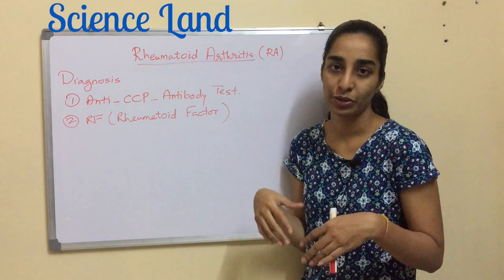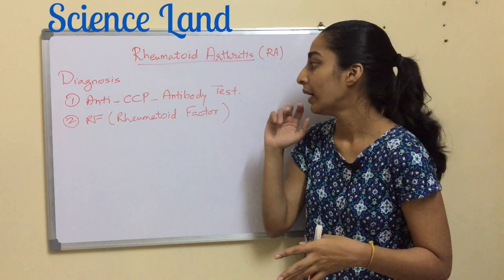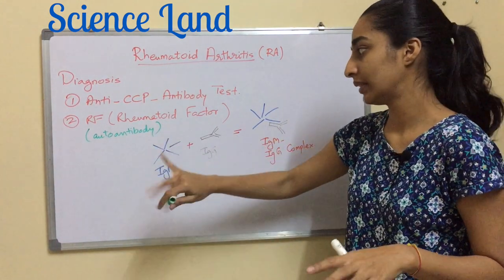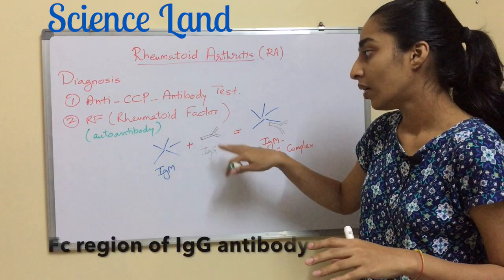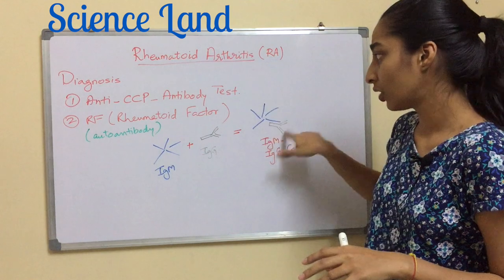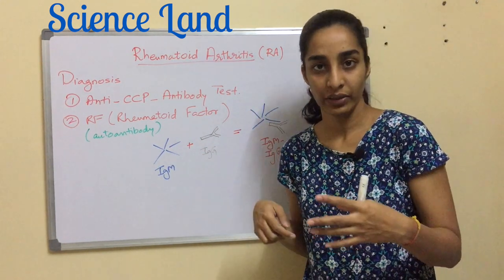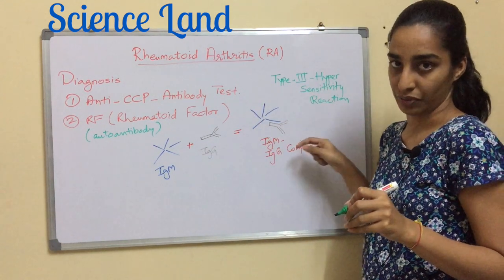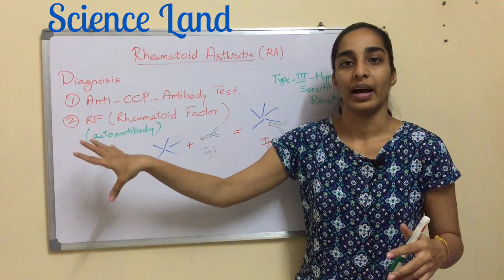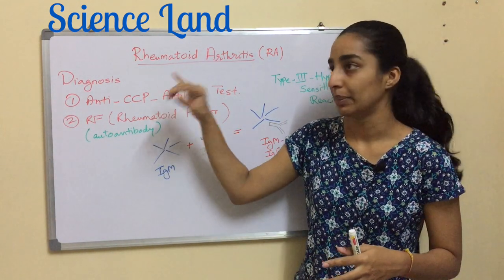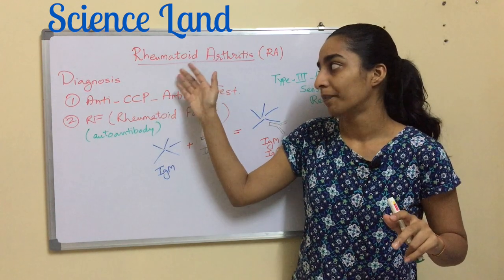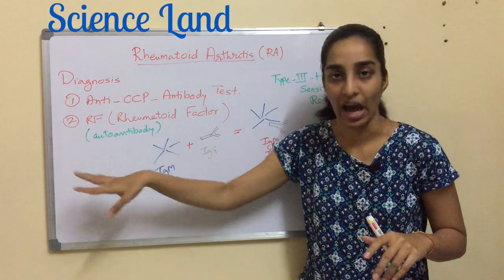For diagnosis, the first test is the anti-CCP antibody test, which detects the patient's ACPA. The second is the rheumatoid factor (RF). RF is an IgM pentavalent antibody that targets IgG in the body, forming an IgM-IgG complex. This complex migrates near the joint and leads to a type 3 hypersensitivity reaction, causing chronic inflammation. When blood is taken from the patient, the RF factor is checked. However, RF is neither as specific nor as sensitive as ACPA — ACPA is 98% specific to the disease, making it the first-line diagnostic marker over RF.